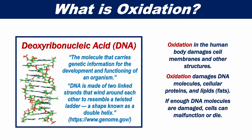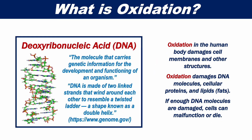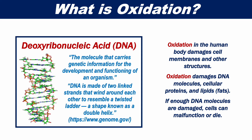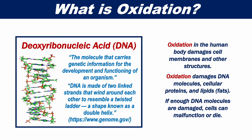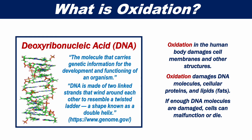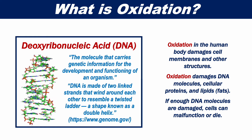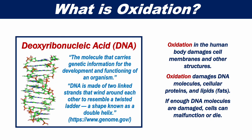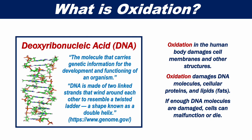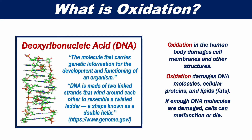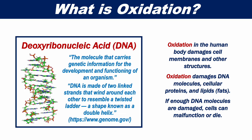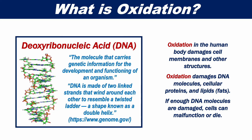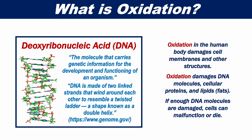Oxidation in the human body damages cell membranes and other structures. Oxidation damages DNA molecules, cellular proteins, and lipids. If enough DNA molecules are damaged, cells can malfunction or die.